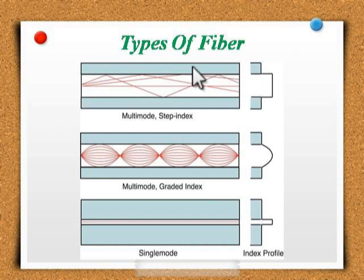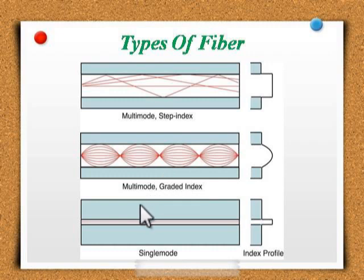This results in light rays arriving at the receiver at different times, as the light rays travel in a straight line. The second type is graded index. It has a gradual change in the core's refractive index. This causes the light rays to be gradually bent back into the core path, represented by a curved reflection path. The result is a better received signal than step index.